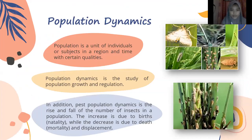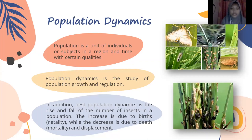What is Population Dynamics? Population is the number of individuals or subjects in a region and time with certain qualities. Population Dynamics is the study of population growth and regulation. West Population Dynamics refers to the rise and fall of the number of insects in a population. The increase is due to birth or natality, while the decrease is due to death or mortality and displacement.